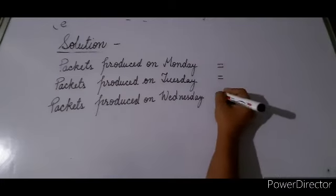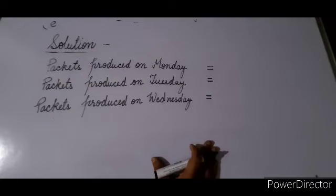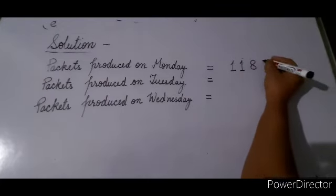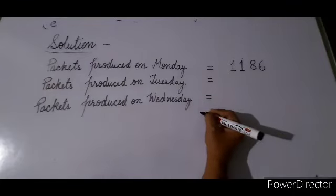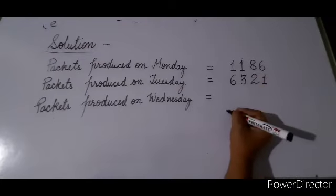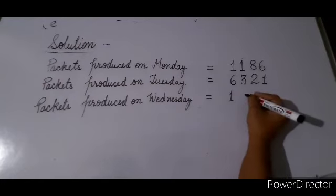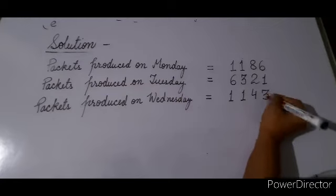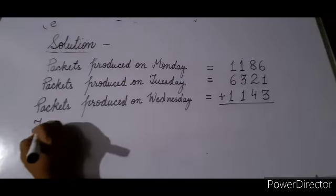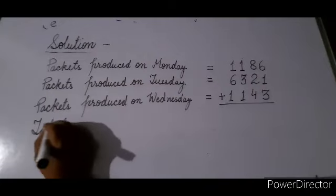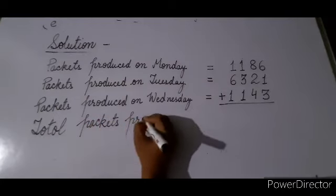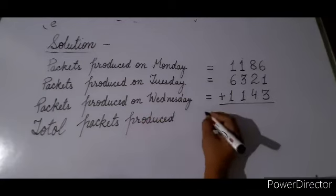Now the equal sign. Monday: 1186 — write 1186. Tuesday: 6321 — write 6321. Wednesday: 1143 — write 1143. Then plus sign because you have to add. Add all three numbers. Write 'Total packets produced' with the equal sign. Tell me the answer after adding.